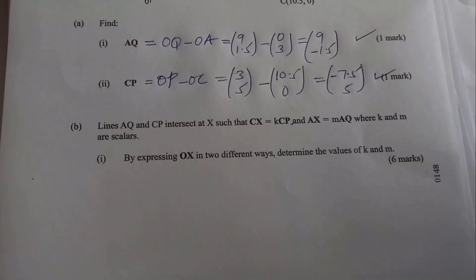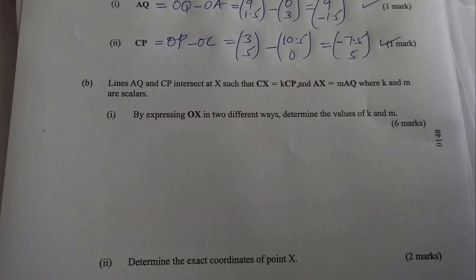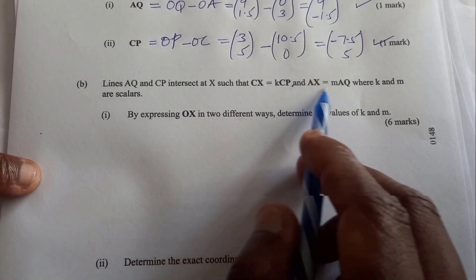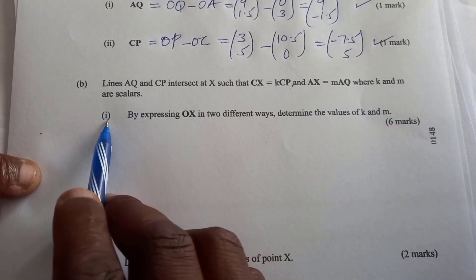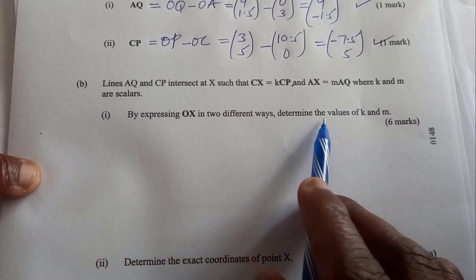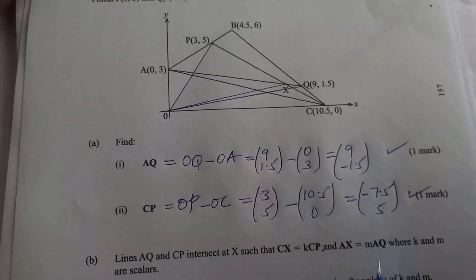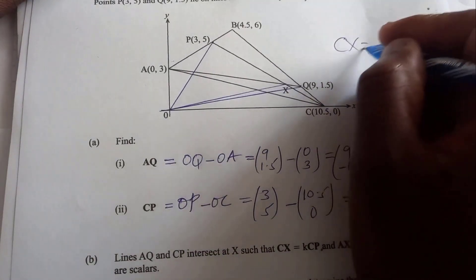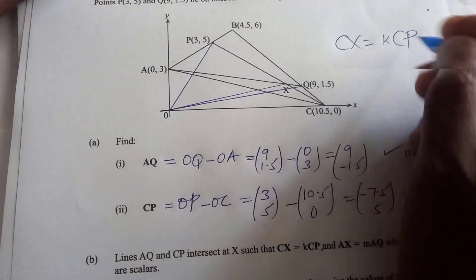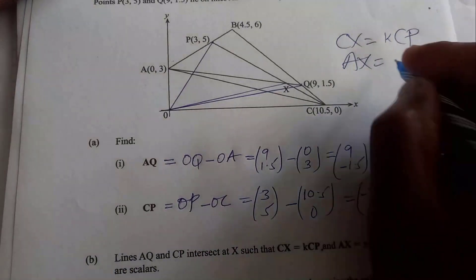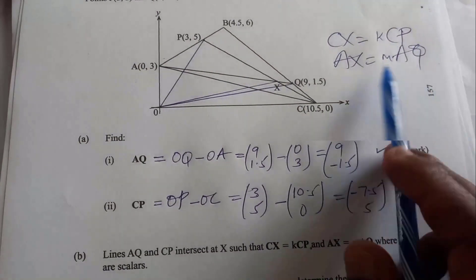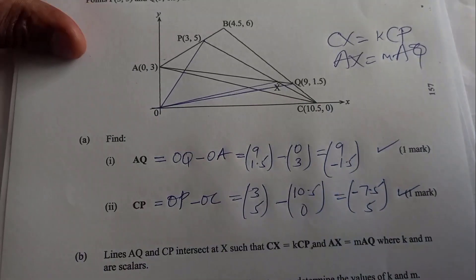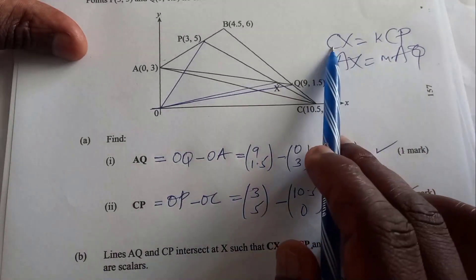So let's go to Part B. Lines AQ and CP intersect at X such that CX = k·CP and AX = m·AQ, where k and m are scalars. By expressing OX in two different ways, determine the values of k and m. Notice where X is in the diagram. You're given that CX = k·CP and AX = m·AQ. Using these two, you're supposed to express OX in two different ways — the first way must utilize CX, and the other way must utilize AX.